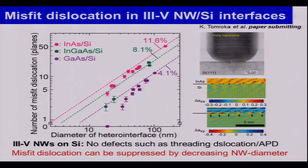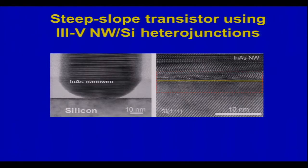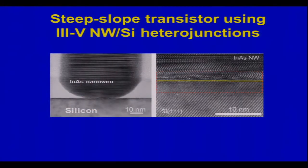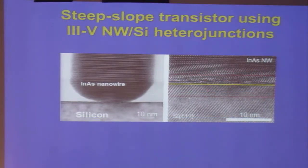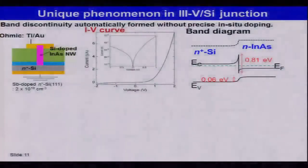Instead, the nanowire has many stacking faults, as shown here. We will utilize these tiny 3-5 nanowires on silicon as a new junction for steep slope transistors. Once we can create a very abrupt heterointerface with fewer misfit dislocations, we can use these heterojunctions for tunneling FET applications.